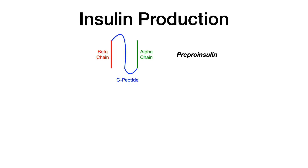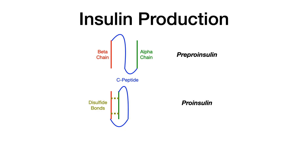In the first step of insulin biosynthesis, the beta chain and the alpha chain are connected by disulfide bonds, shown here in gold/yellow. At this point, you have what's known as pro-insulin. So going from pre-pro insulin to pro-insulin, you're merely establishing disulfide bonds connecting your alpha and beta chains. The C-peptide shown in blue is still there.